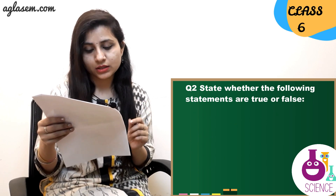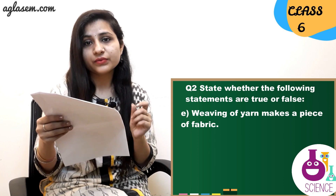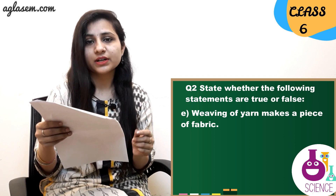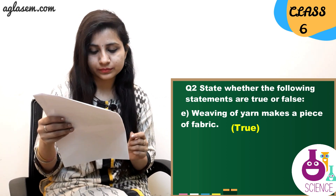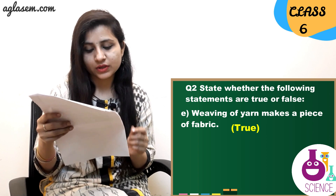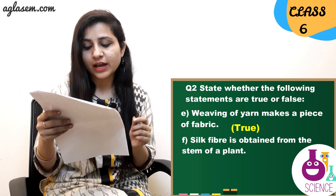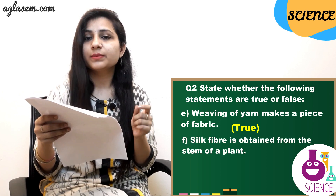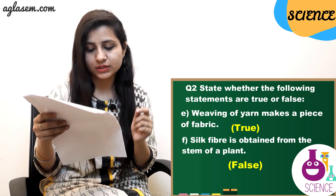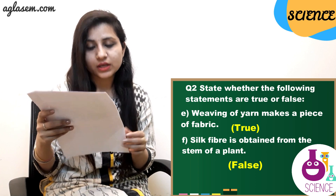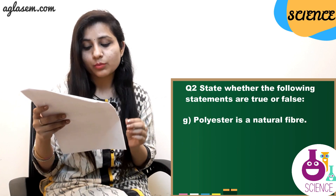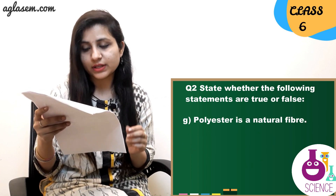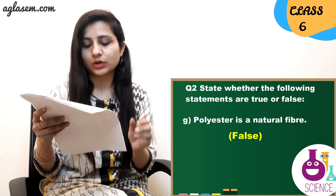(d) The process of removing seeds from cotton is called ginning — True. (e) Weaving of yarn makes a piece of fabric — True. (f) Silk fiber is obtained from the stem of a plant — False. (g) Polyester is a natural fiber — False.